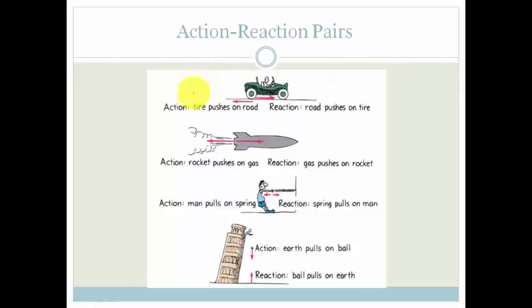That means that we can get action-reaction pairs. So for example, an action is that a tire pushes on the road. So action would be that a tire pushes on the road. The reaction would be that the road pushes on the tire.